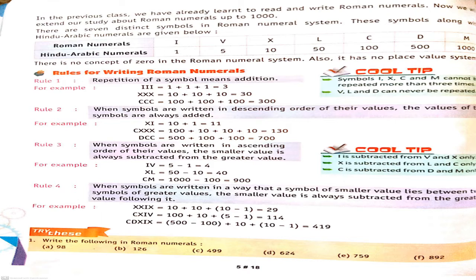Now second rule: when symbols are written in descending order of their values, the values of the symbols are always added. If we write symbols in descending order, their values are added. For example, X and I written as XI: 10 plus 1 equals 11.